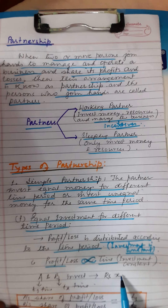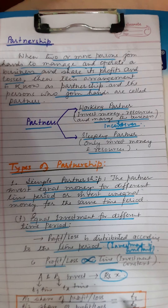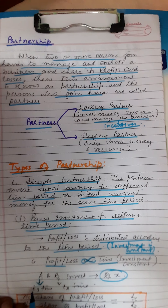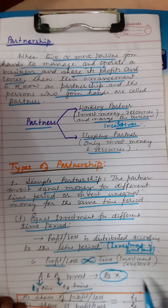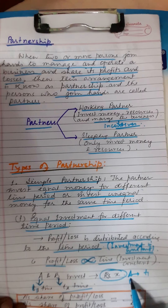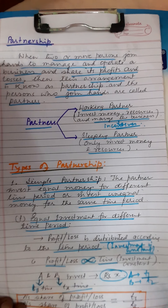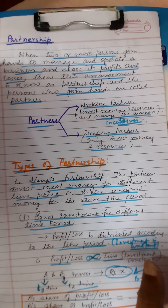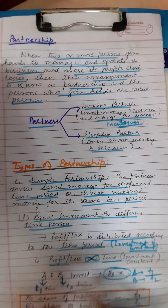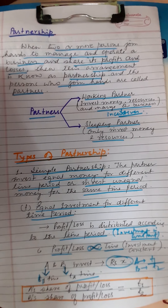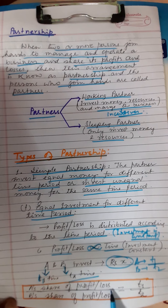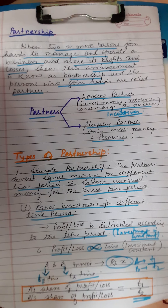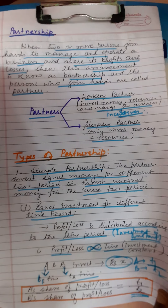For example, if two partners A and B both invest rupees X, where A invests for time T1 and B invests for time T2, then their profit share ratio is: A's share of profit divided by B's share of profit equals T1 divided by T2.